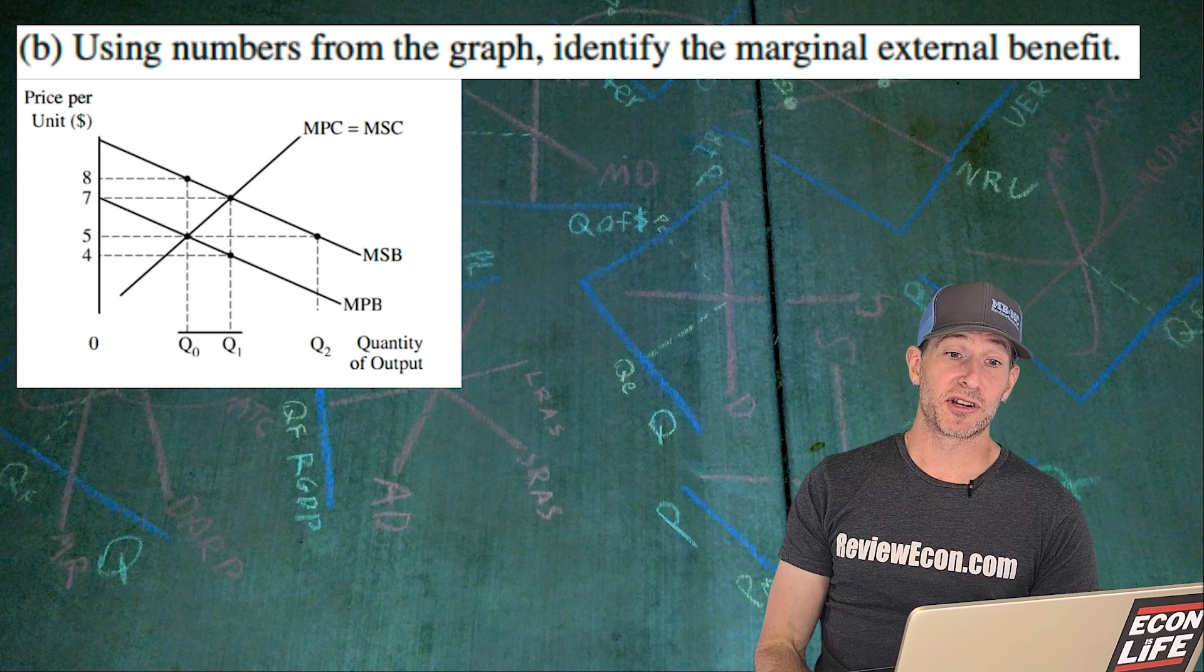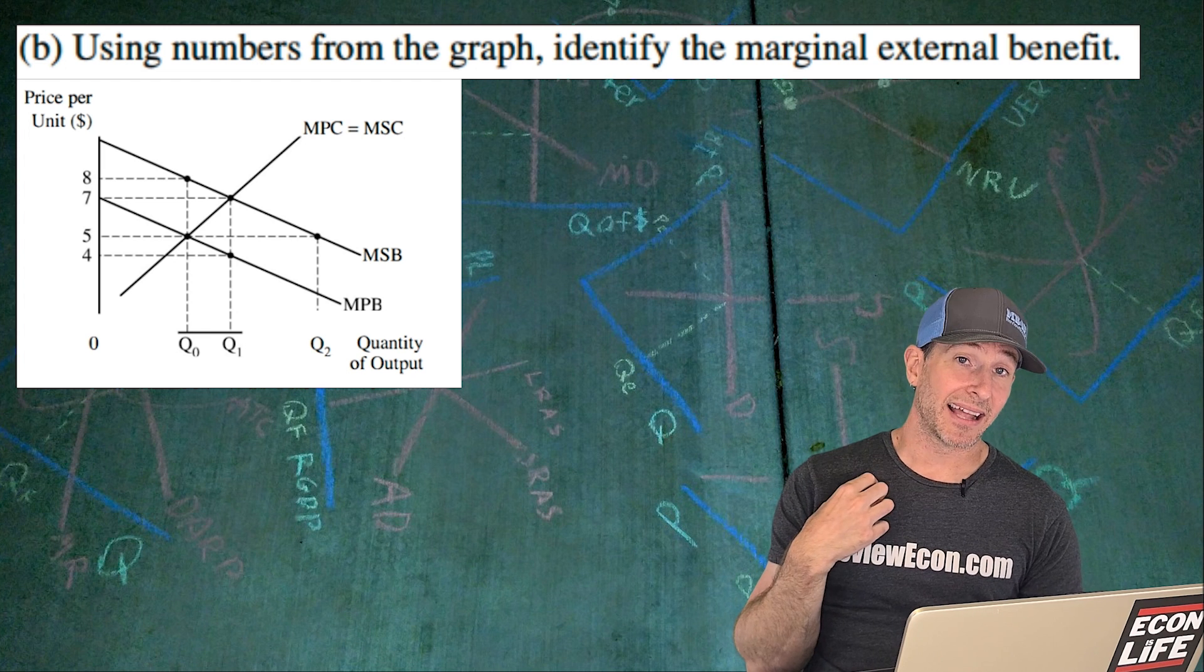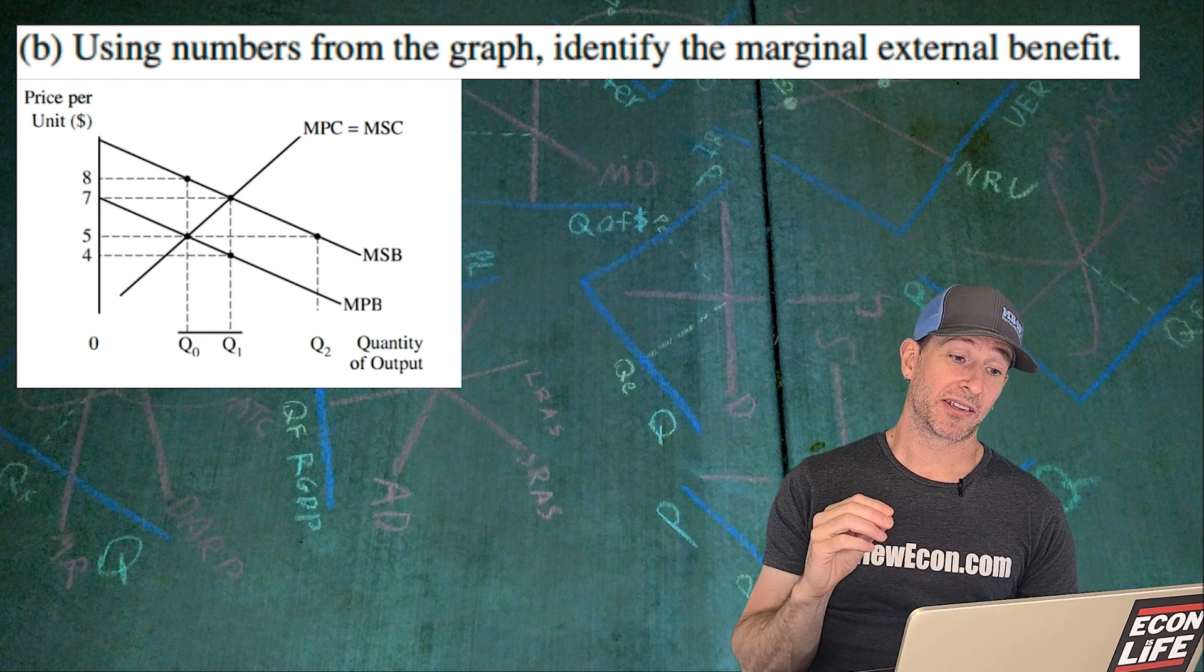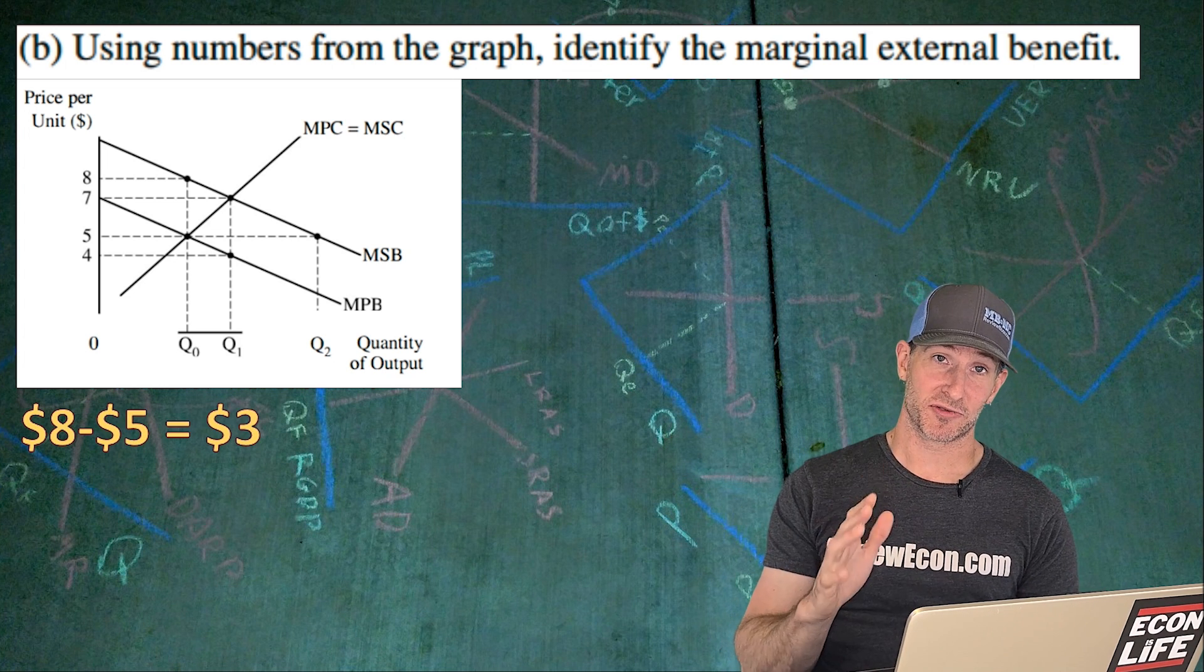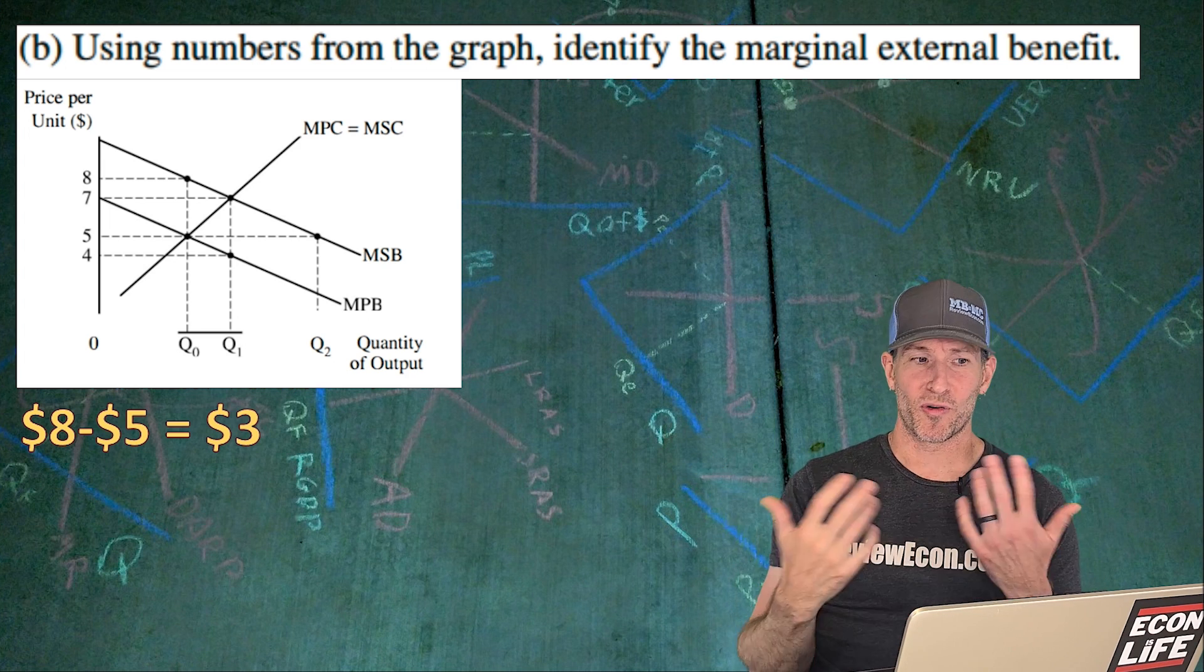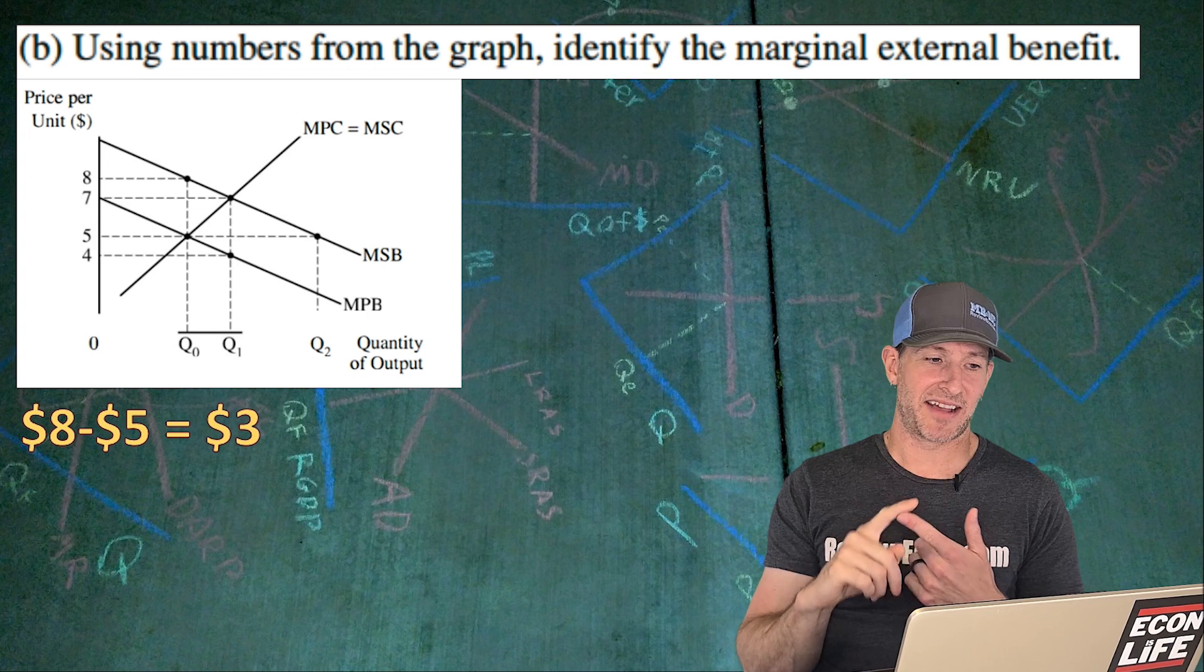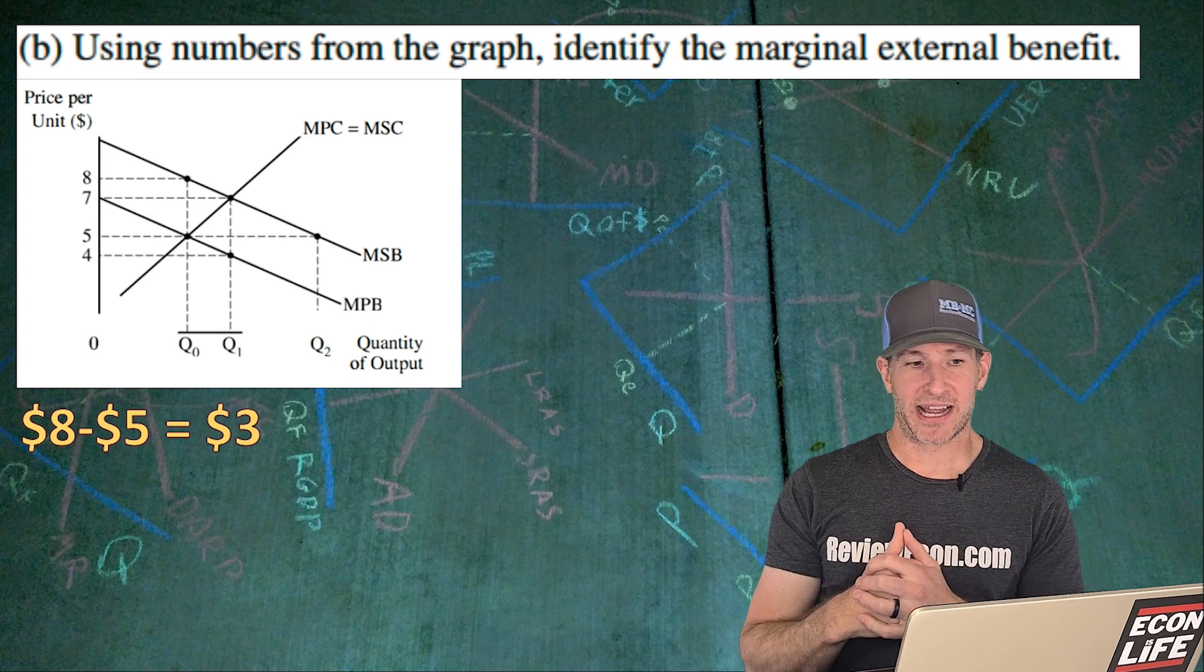Using numbers from the graph, we're going to identify that amount of external benefit. I like to take the external benefit at the market quantity, which would be Q0 here. So I'm going to go with 8 minus 5 equals $3. These are parallel lines, so it's the same amount the whole way through. If you showed your math and you said 7 minus 4, I expect they're going to give it to you as well there. But we'll see what happens.